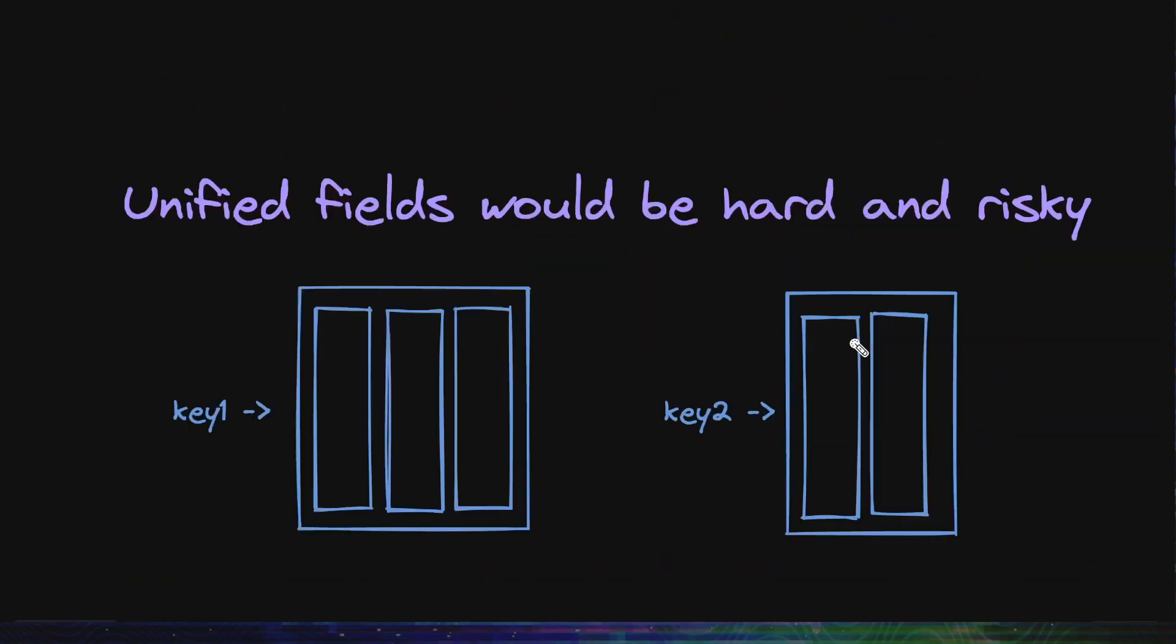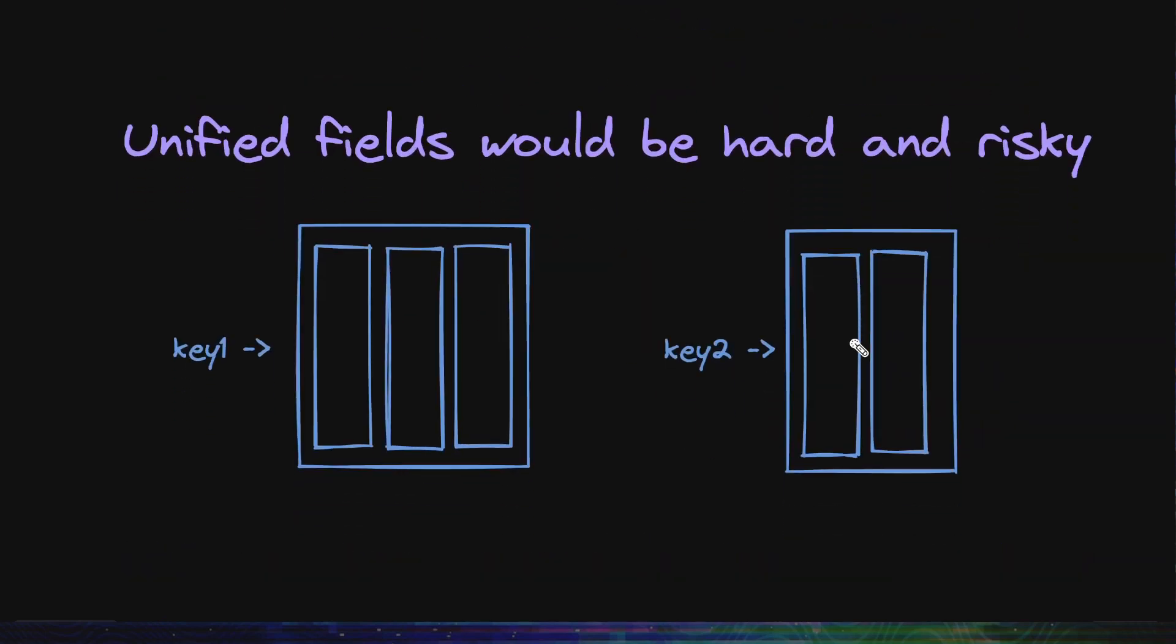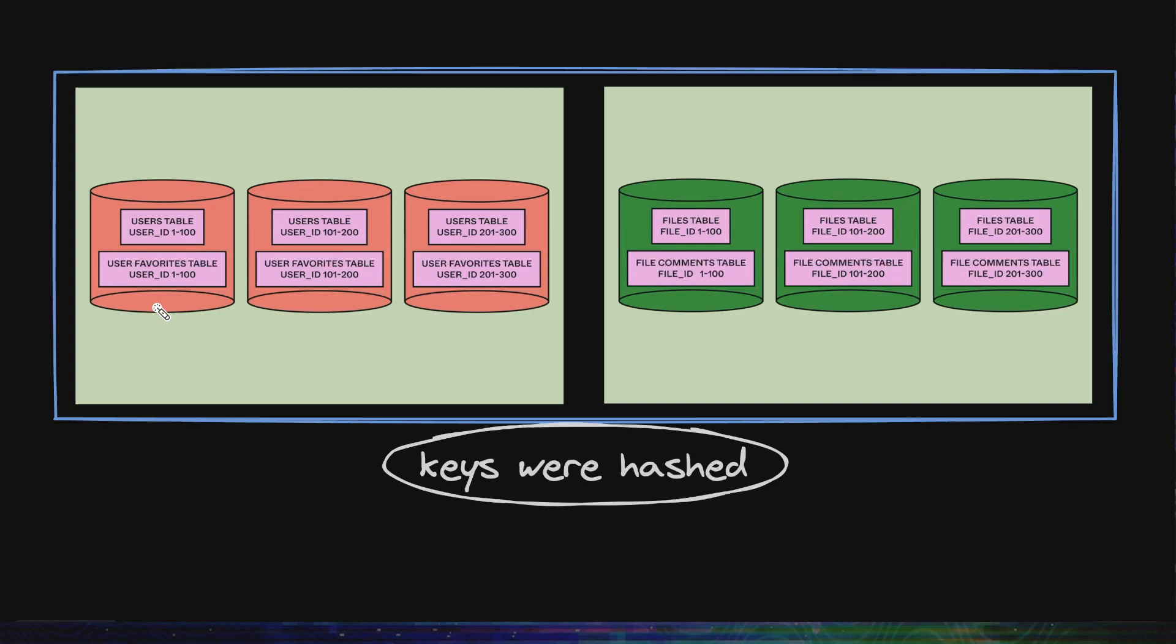Now, the challenge is to select a shard id for the tables. They thought of having a unified key for all the tables, but there's an issue. There were no common keys in all kinds of tables. They could have added extra keys into each table and created composite keys, but that's extra work and extra risk. They wanted to derisk. So they decided to have different shard ids for different groups of tables. Tables user and user_favorites are sharded by user_id and file and file_comments table is sharded by file_id.